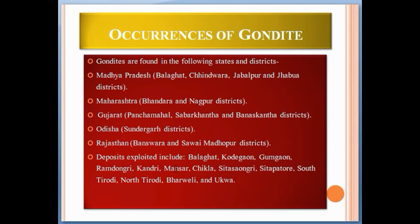Deposits exploited include Balaghat, Kodegaon, Gumgaon, Ram Dongari, Kandri, Mansar, Chikla, Sitasongi, Sitapator, South Tirodi, North Tirodi, Bharveli, and Ukwa. In these areas, gondite rock is associated with manganese ore, making it a very important deposit of manganese.